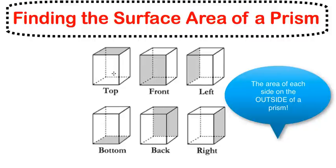When we're finding surface area, we look at all the sides of the shape — the top, the front, left, the bottom, the back, and the right. We are basically going to measure the area of all of the sides of this shape, and then add that all together to find the total area of the outside of the shape.